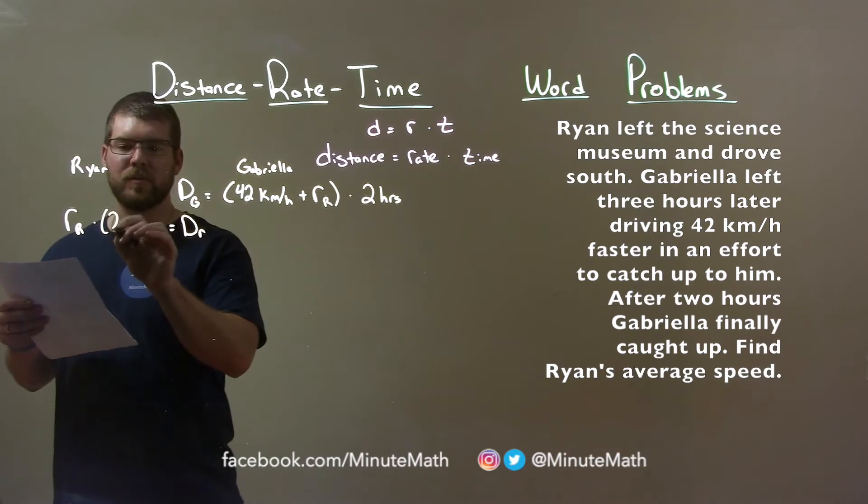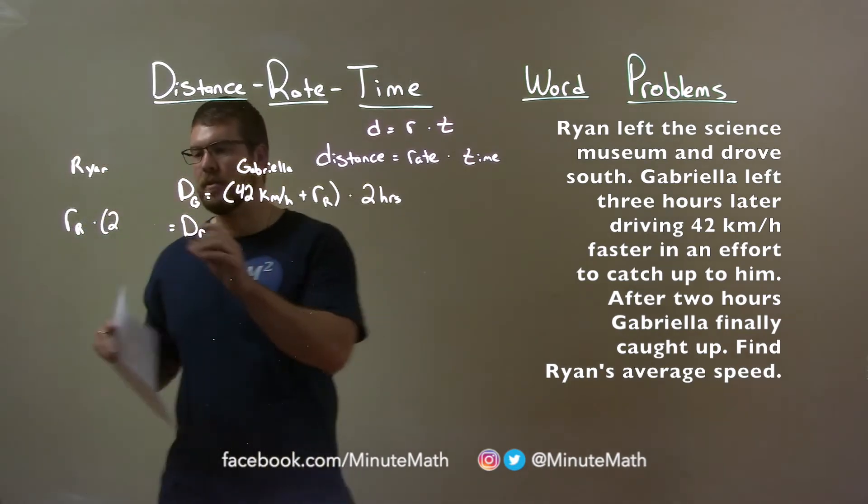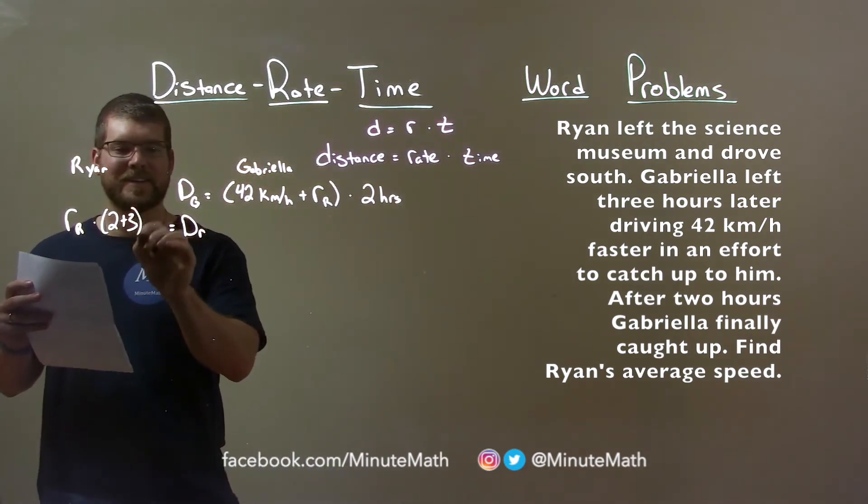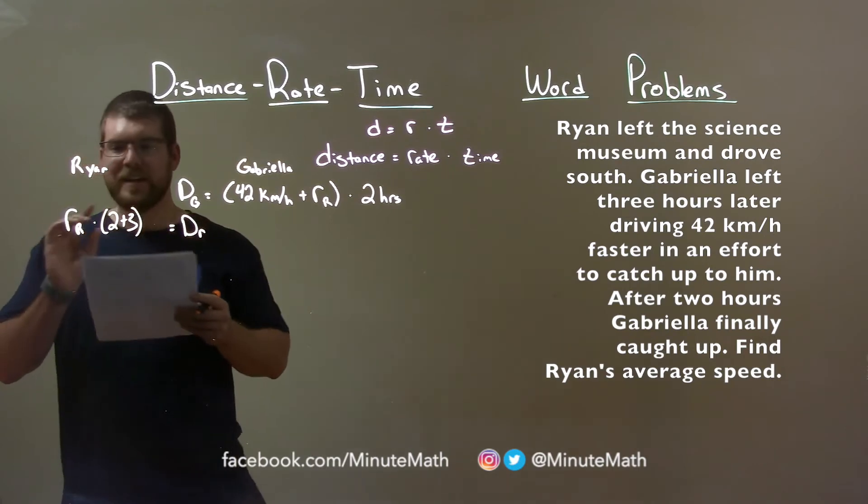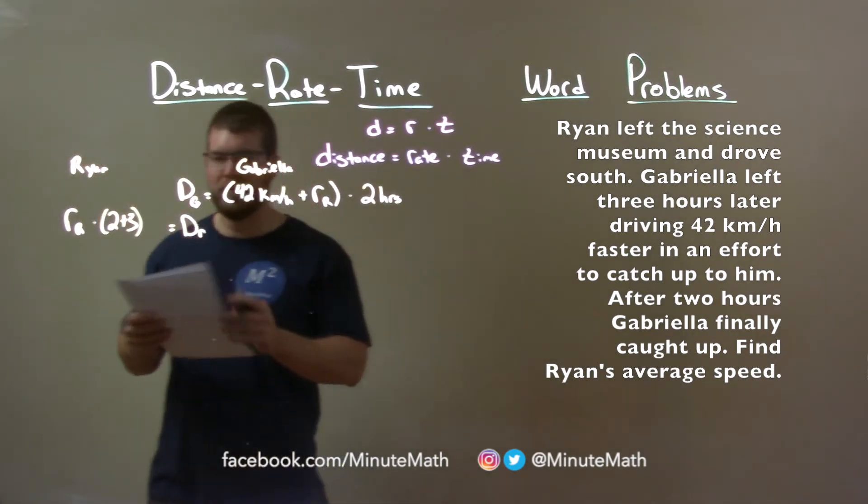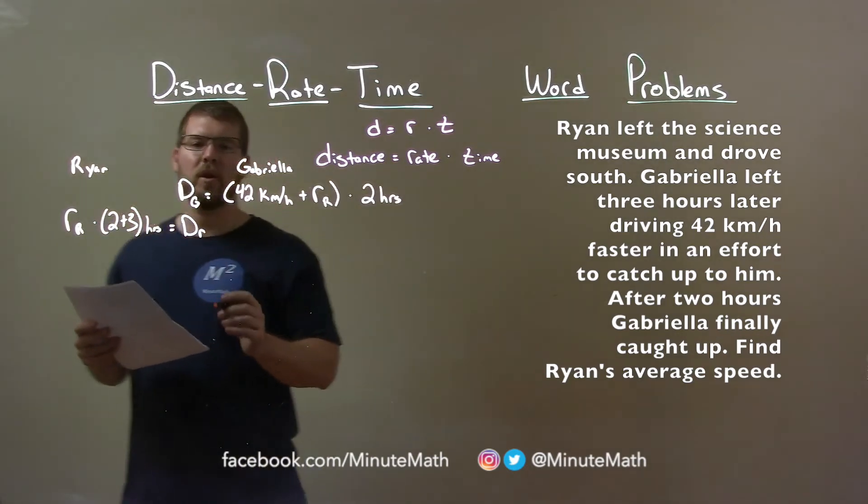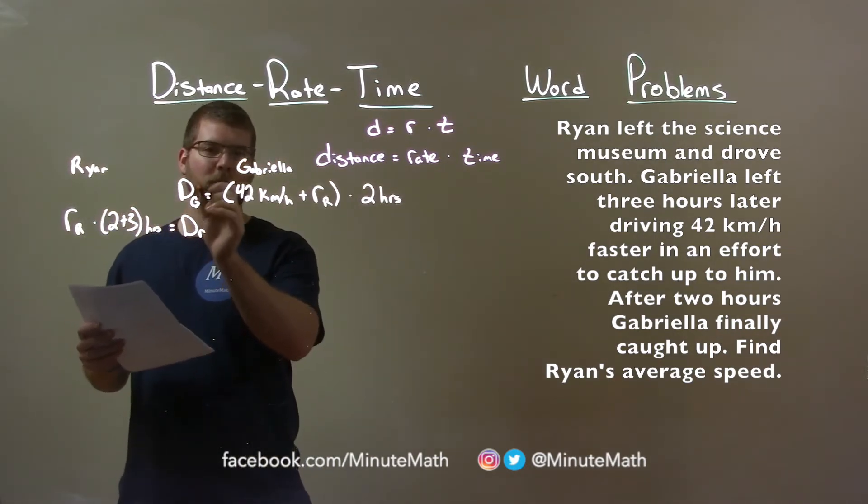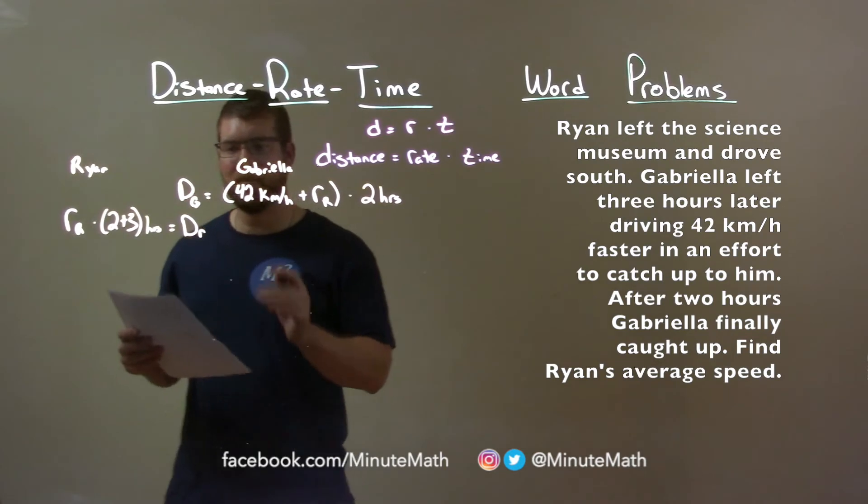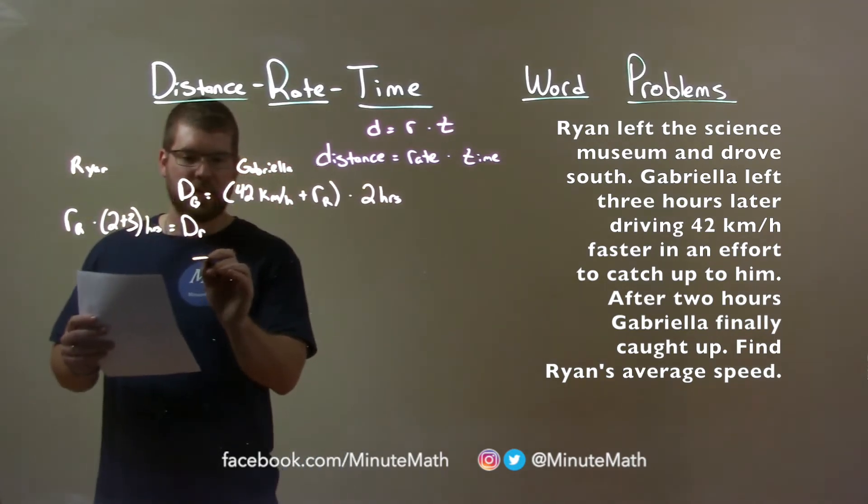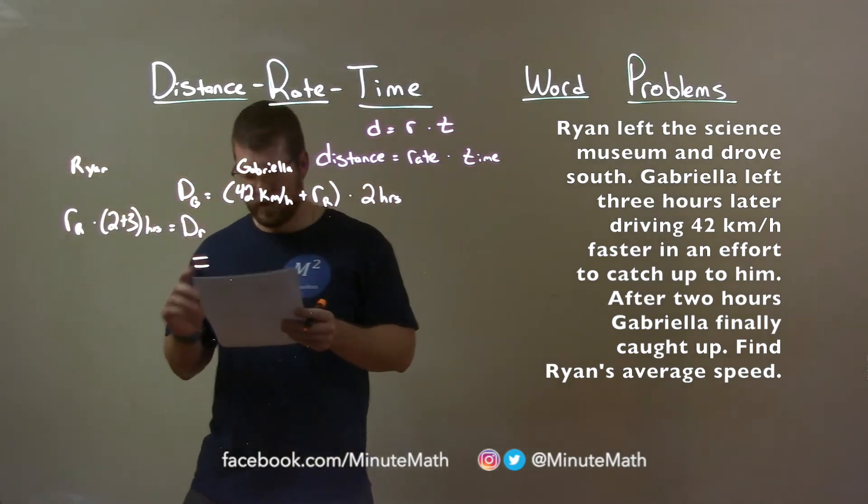So three plus two, two plus three, doesn't really matter the order, together gives us the time Ryan was driving, five hours. Well, we know the distance overall for Gabriella and Ryan were the same, so we kind of make them equal to each other here, and now we have an equation.